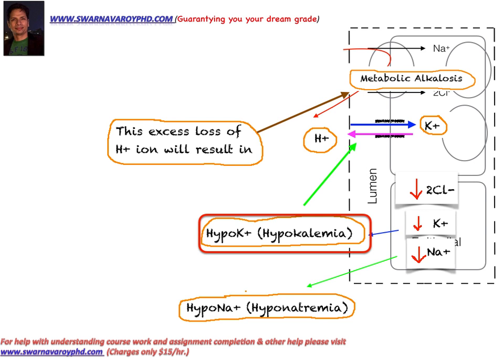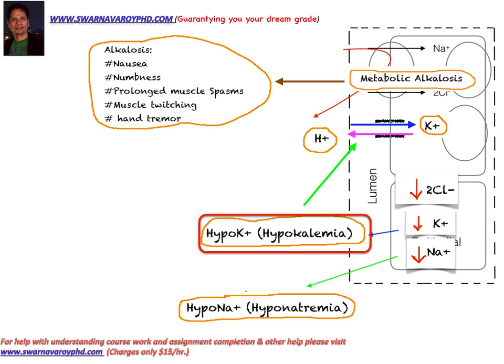Metabolic alkalosis is a common side effect for patients using diuretic drugs and in people with Bartter syndrome. When alkalosis sets in — when our kidneys become very basic and alkaline in nature — patients have nausea, numbness, prolonged muscle spasms, muscle twitching, and tremor in the hand. These are the side effects of diuretic drugs and the manifestations in patients with Bartter syndrome.